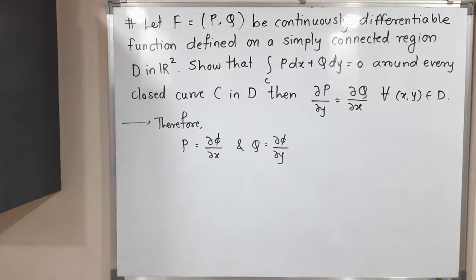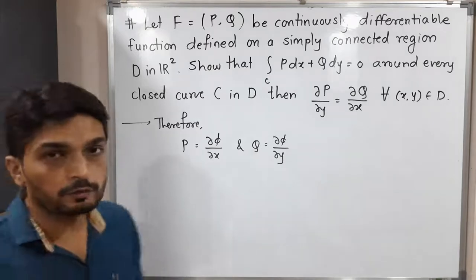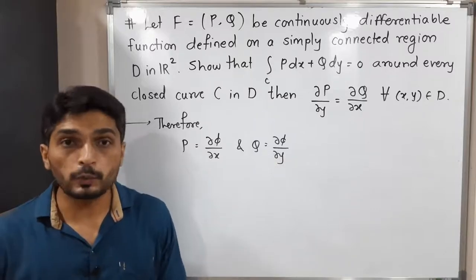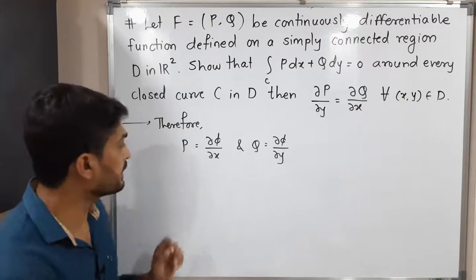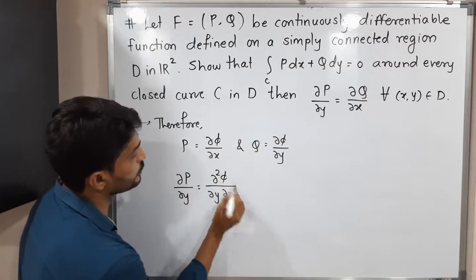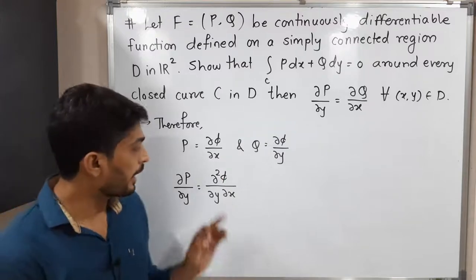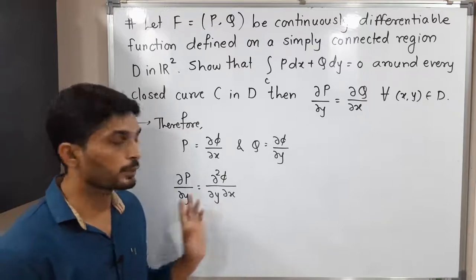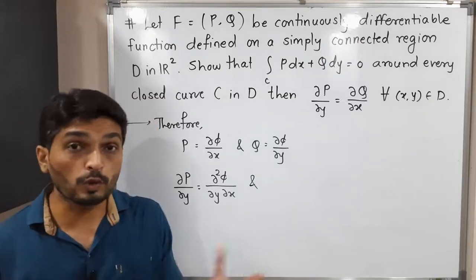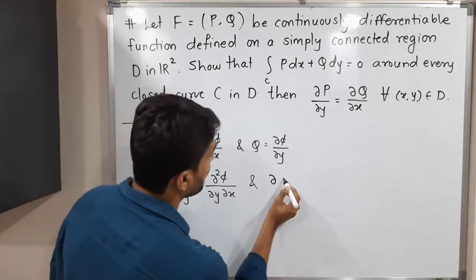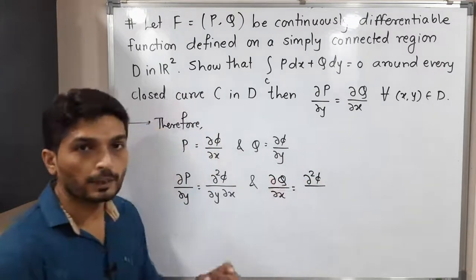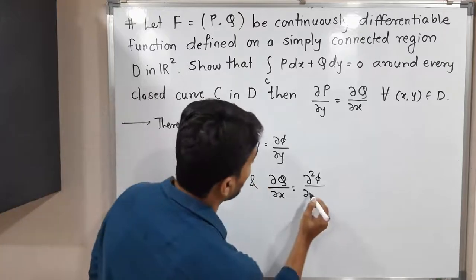So P equals the first component ∂φ/∂x, and Q equals the second component ∂φ/∂y. Now I will take the partial derivative of P with respect to y, which gives ∂²φ/∂y∂x, since a partial derivative with respect to x is already there and we are now taking one with respect to y. On the other side, taking the partial derivative of Q with respect to x gives ∂²φ/∂x∂y.